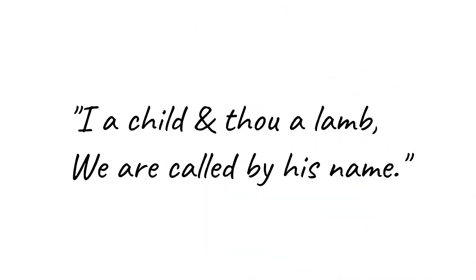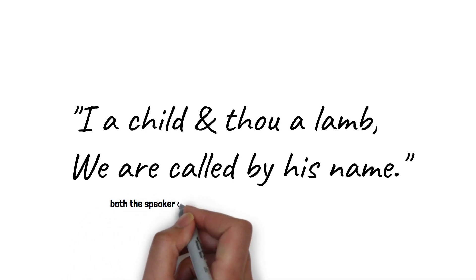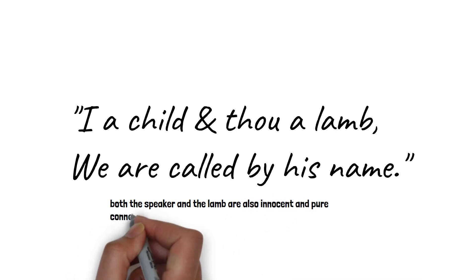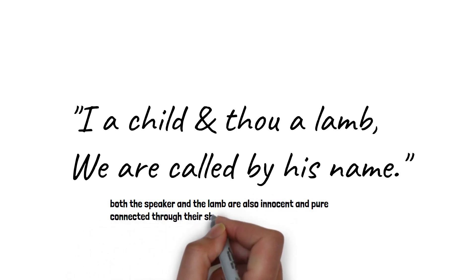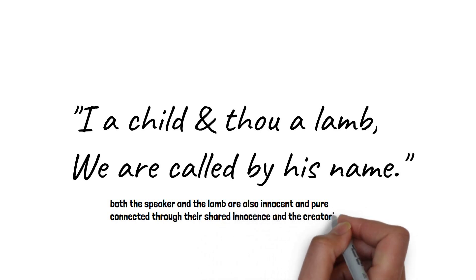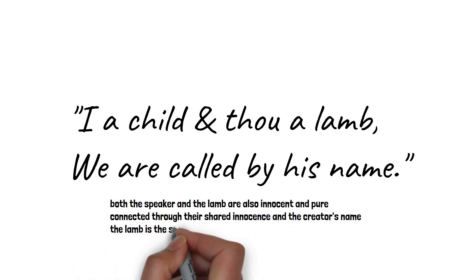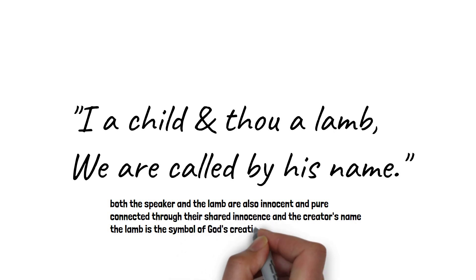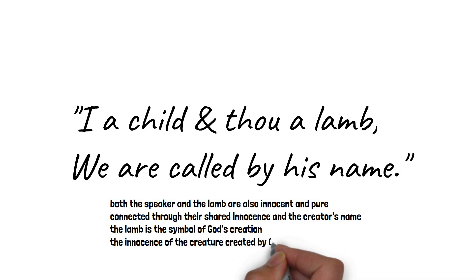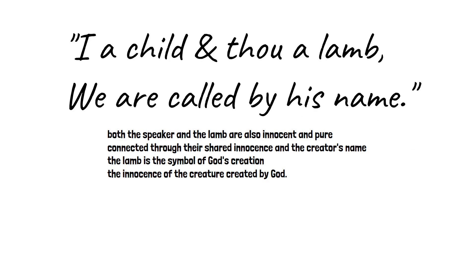I a child and thou a lamb, we are called by his name. In this final line, the speaker suggests that both the speaker and the lamb are also innocent and pure, and that they are all connected through their shared innocence and the creator's name. The poem suggests that the lamb is the symbol of God's creation and the innocence of the creature created by God.